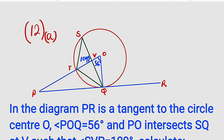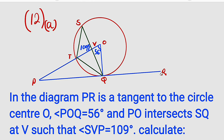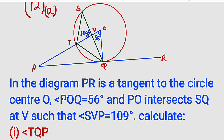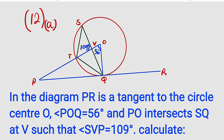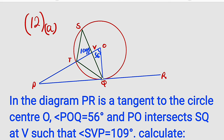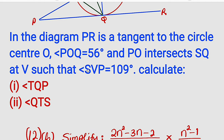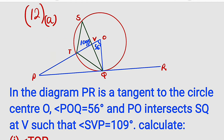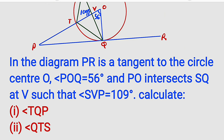Hello, good day viewers. Here is question number 12 of the Y2024 mathematics examination, theory questions. Question 12a is under circle theorem, and we are given a diagram. In the diagram, the line PR is a tangent — remember, a tangent touches the circle at exactly one point, which is at Q. The angle POQ is 56 degrees. The line PO intersects another line SQ at point V, such that the angle SVP is 109 degrees.